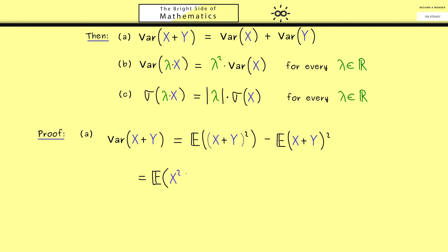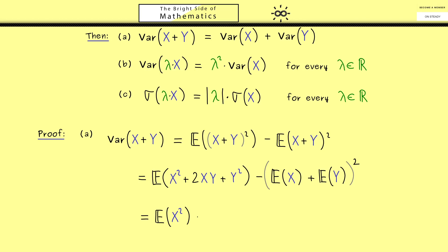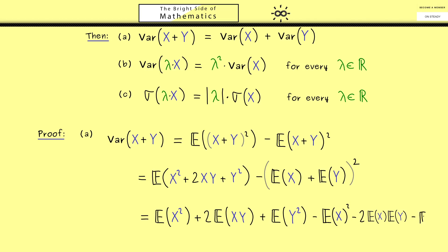First, let's expand the square inside the expectation: that's X squared plus 2 times X times Y plus Y squared. In the next step we can use the linearity, and on the right hand side we get the expectation of X plus the expectation of Y, still squared. Then applying linearity to the first part gives: expectation of X squared, plus 2 times the expectation of X times Y, plus expectation of Y squared. Expanding the squared term on the right gives: expectation of X squared, minus 2 times expectation of X times expectation of Y, plus squared expectation of Y.